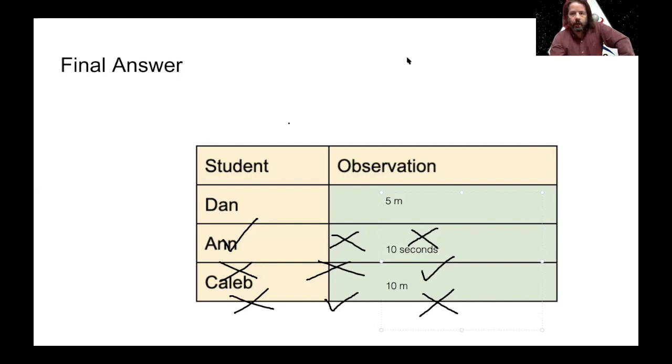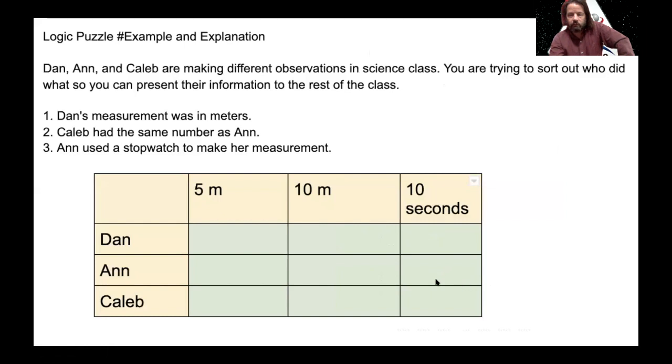Now, let's go back. So once we mark a check, that person can only have that value. So let's take a look at another way to do this. Another way to do this is Dan's measurement was in meters. So you could actually mark like a question mark, question mark, but we knew it wasn't 10 seconds.